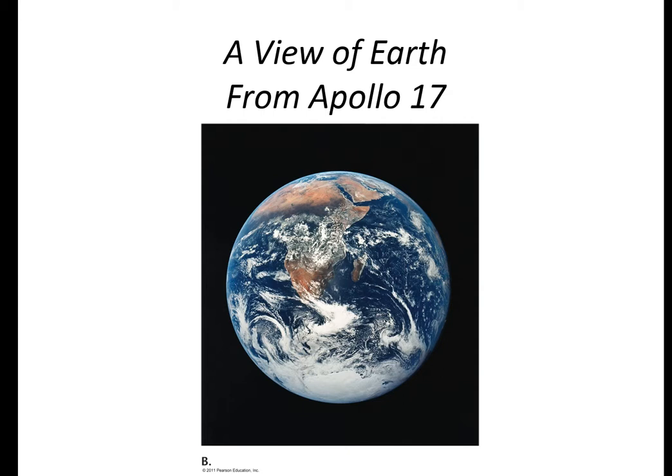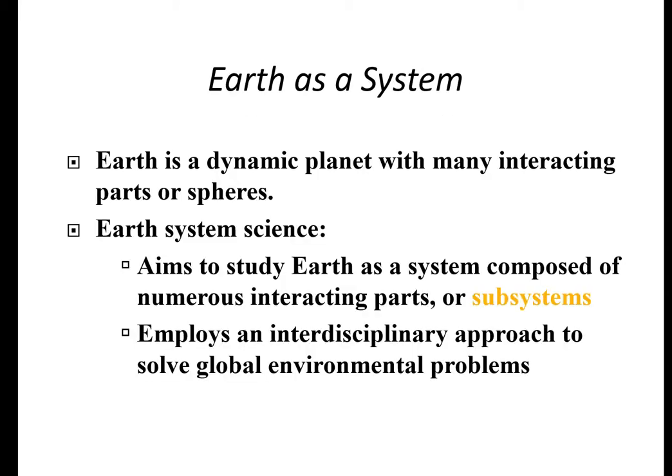Here's a picture from Apollo 17, taken on the way to the moon in the early 70s by the three Apollo astronauts looking back at the Earth. The Earth can be thought of as a system — a dynamic planet with many interacting parts or spheres. Earth System Science tells us these systems have subsystems and interacting parts, and we employ an interdisciplinary approach using geology, physics, astronomy, earth science, space science, biology, and chemistry to solve global environmental problems.